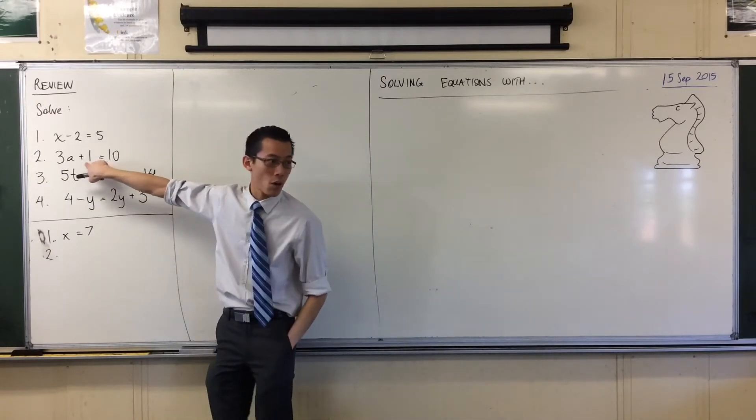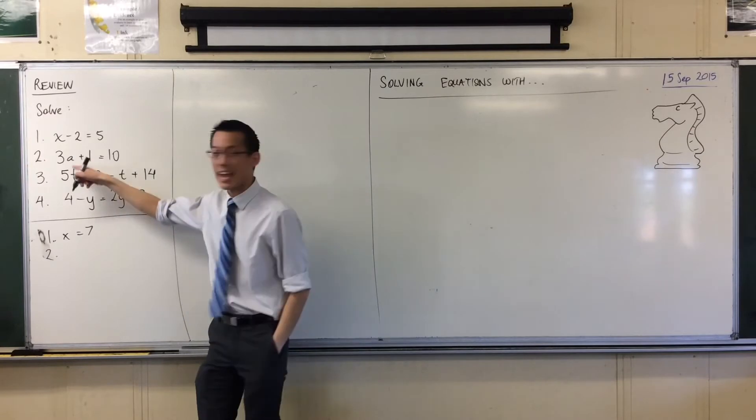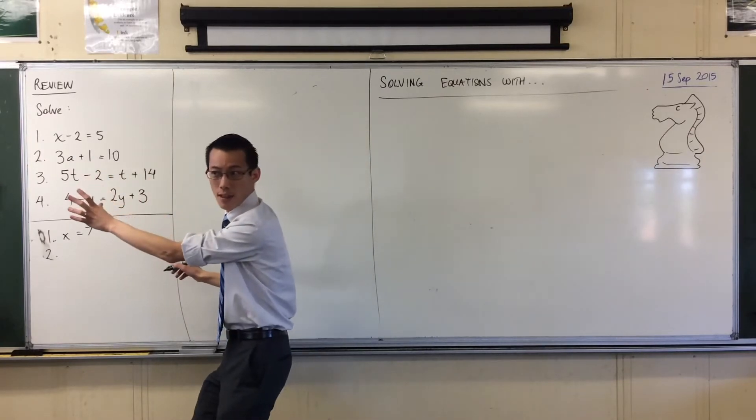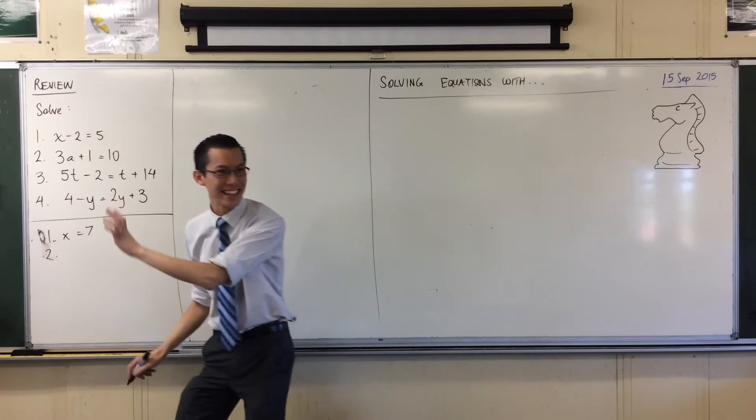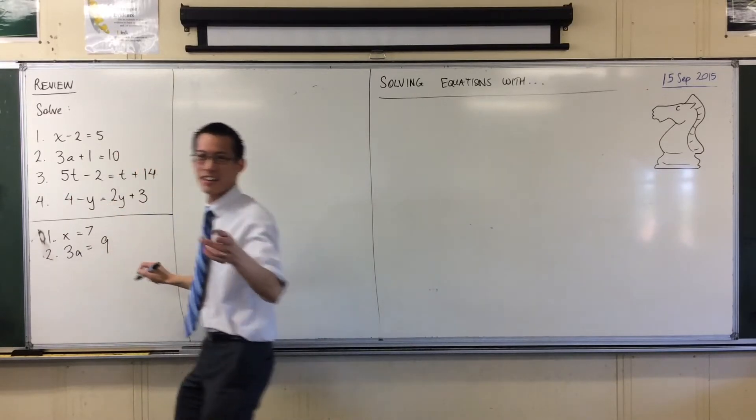Would you like me to get rid of the one or the three first? Let's get rid of the one. Okay, so if I take away 1 from both sides, on the left that leaves me with 3x. And on the right I get 9.